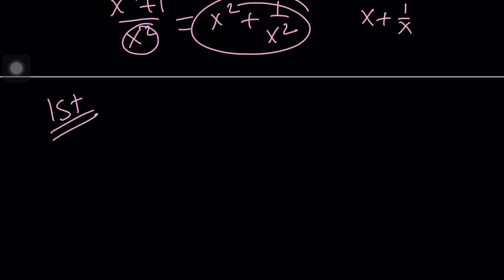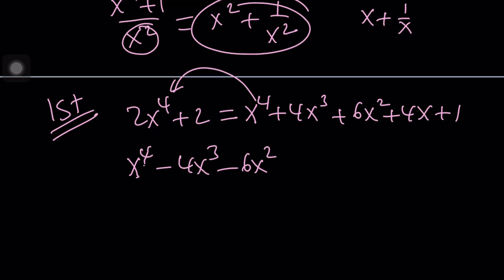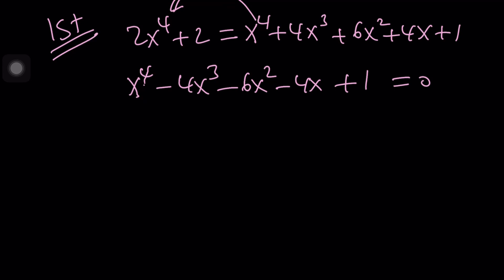So, let's go ahead and cross multiply these two things. 2x to the fourth plus 2 equals, if you expand x plus one to the fourth, remember Pascal's triangle, 1, 4, 6, 4, 1, the fourth row, x to the fourth or the binomial theorem in general, you get the following and then let's go ahead and put everything on the same side. I can go ahead and subtract x to the fourth and then everything else will be coming in, right, with a minus sign and then finally 2 minus 1 is just going to be a positive one and we'll get the following expression.